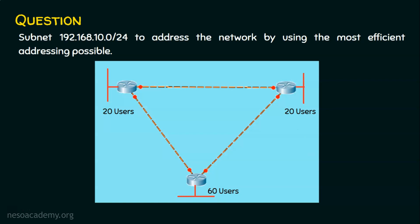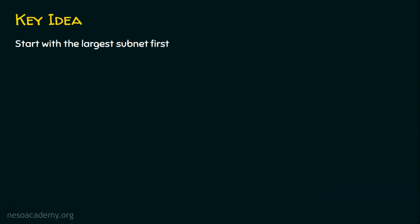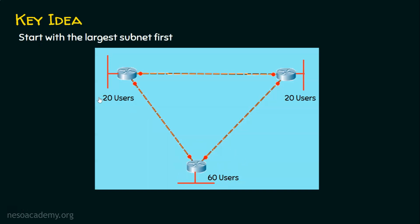The key idea behind VLSM is to always start with the largest subnet. In this scenario, the largest network requires 60 hosts. We will follow the same subnetting methodology as before but with small changes specific to VLSM. Subnetting involves 5 steps, and we will follow all of them, starting with the largest subnet first.